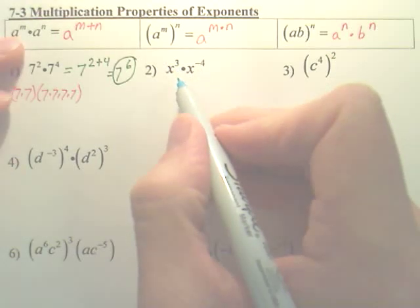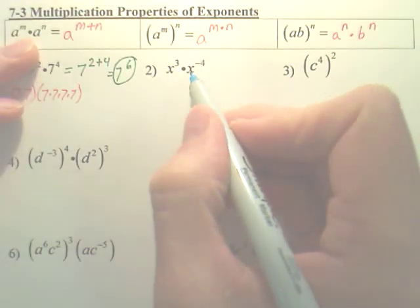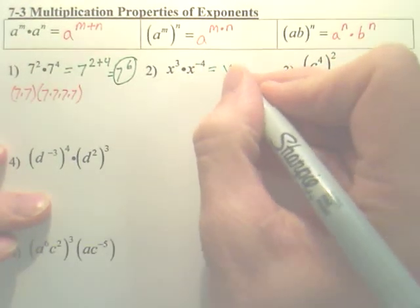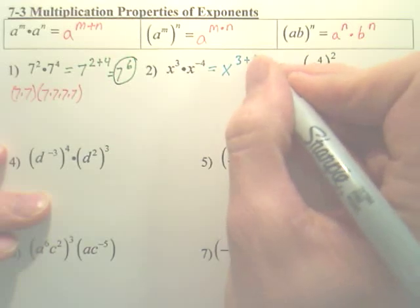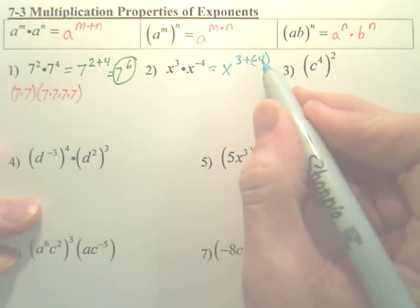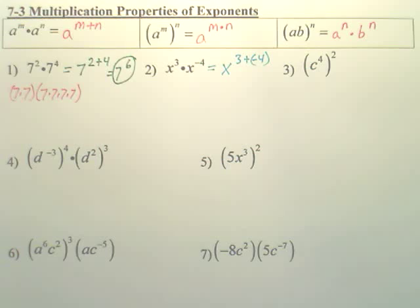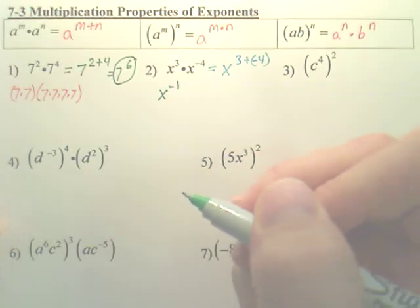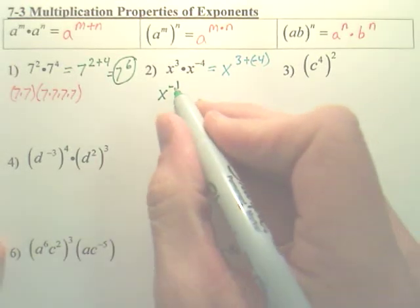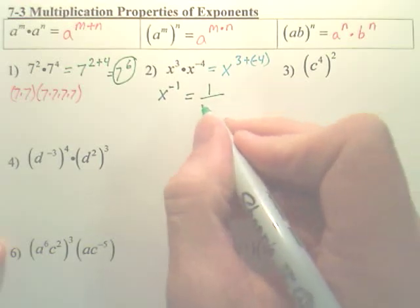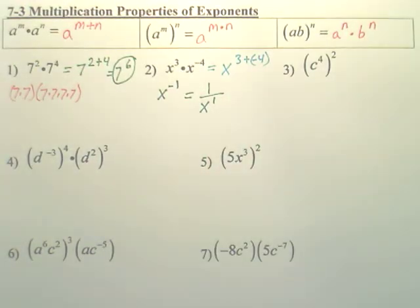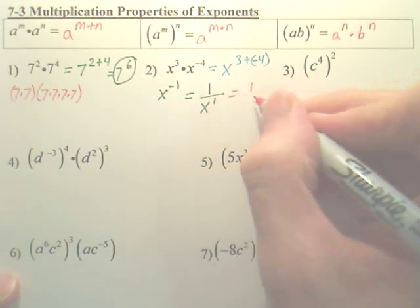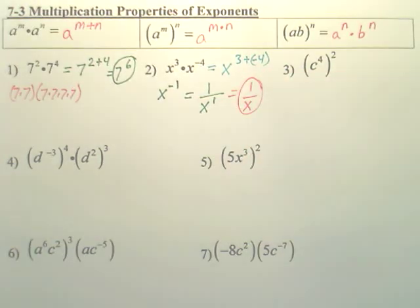For this one, it's still the first property — same bases. So we're going to add the exponents: x to the three plus negative four. Three plus negative four is negative one, so we have x to the negative first. According to previous properties, any negative power becomes one over x to the first. You can drop the first power, so the answer is one over x.